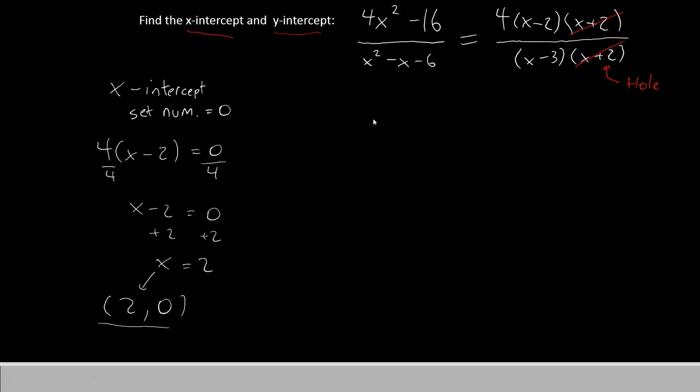For now, let's move on to the y-intercept. For the y-intercept, we set x equal to 0. Again, let's use the simplified form that we have earlier. We'll have 4 times 0 minus 2 divided by 0 minus 3.